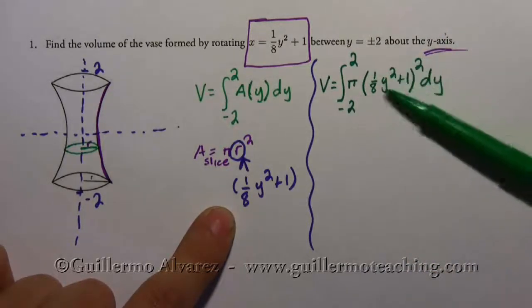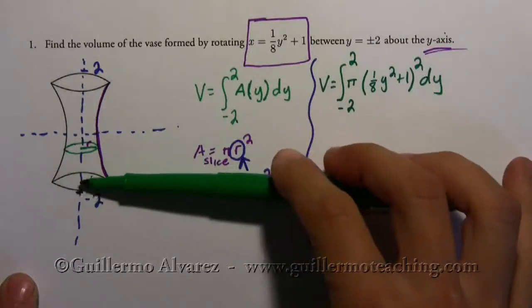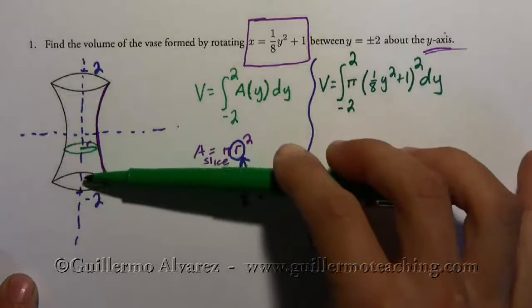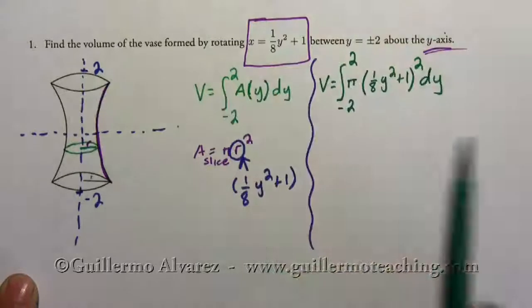And so remember, the idea is that this is the area of one of these little slices. And by integrating, you're basically taking infinitely small slices, infinitely thin slices, and adding all of them up all the way to the top.